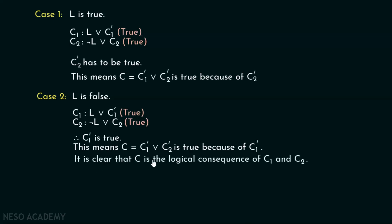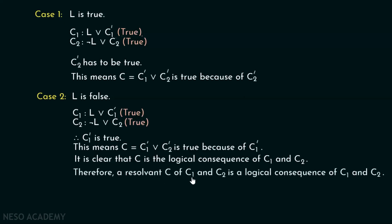So it is clear that C is the logical consequence of C1 and C2, because no matter what, when C1 and C2 are true, then C will definitely be true. Therefore, a resolvent C of C1 and C2 is a logical consequence of C1 and C2.